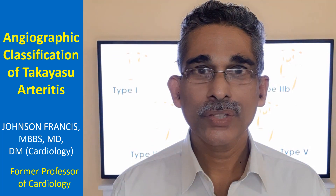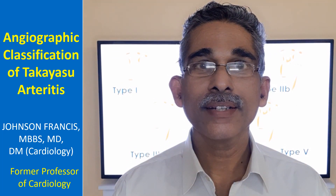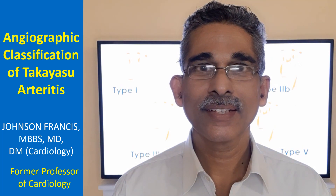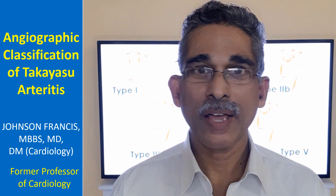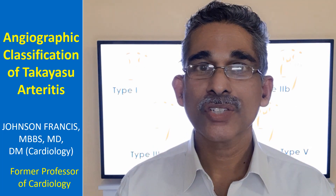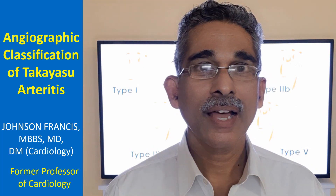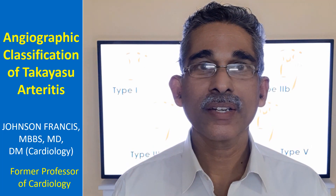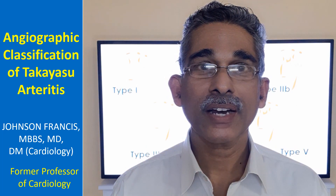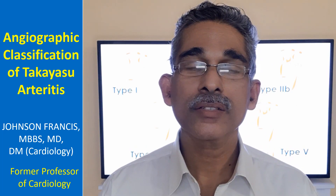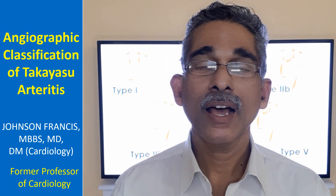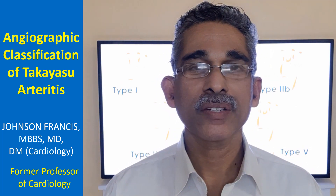Takiyasu Arteritis is an inflammatory disorder of the aorta and its major branches. It can cause fibrosis, thickening of the vessel wall, stenosis, and even thrombus formation in the vessels. Severe inflammation can also weaken the media of the vessel and cause aneurysm formation.